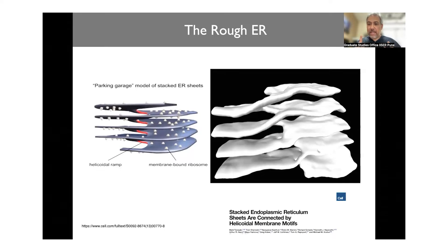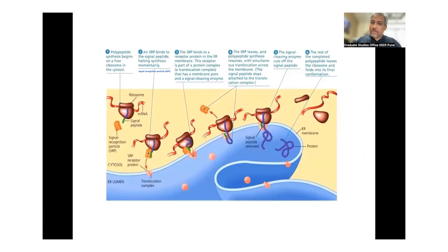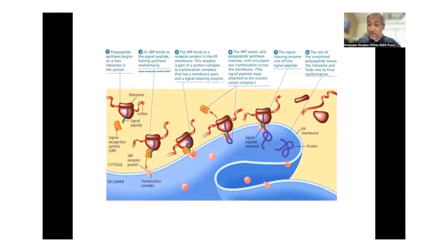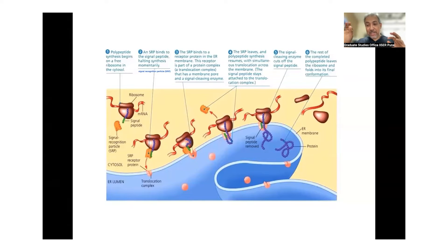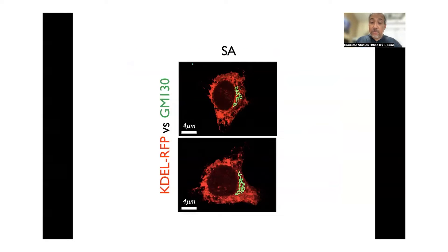Protein synthesis happens through ribosomes on the ER, as we saw in the 'Inner Life of the Cell' movie. Ribosomes come and attach to the ER membrane, and proteins can be synthesized either into the lumen or integrated into the membrane, depending on what kind of protein is being made. All you need to understand at this point is that the ribosome attaches to the ER and allows synthesis of proteins that either get secreted inside or get integrated into the membrane — both scenarios exist.